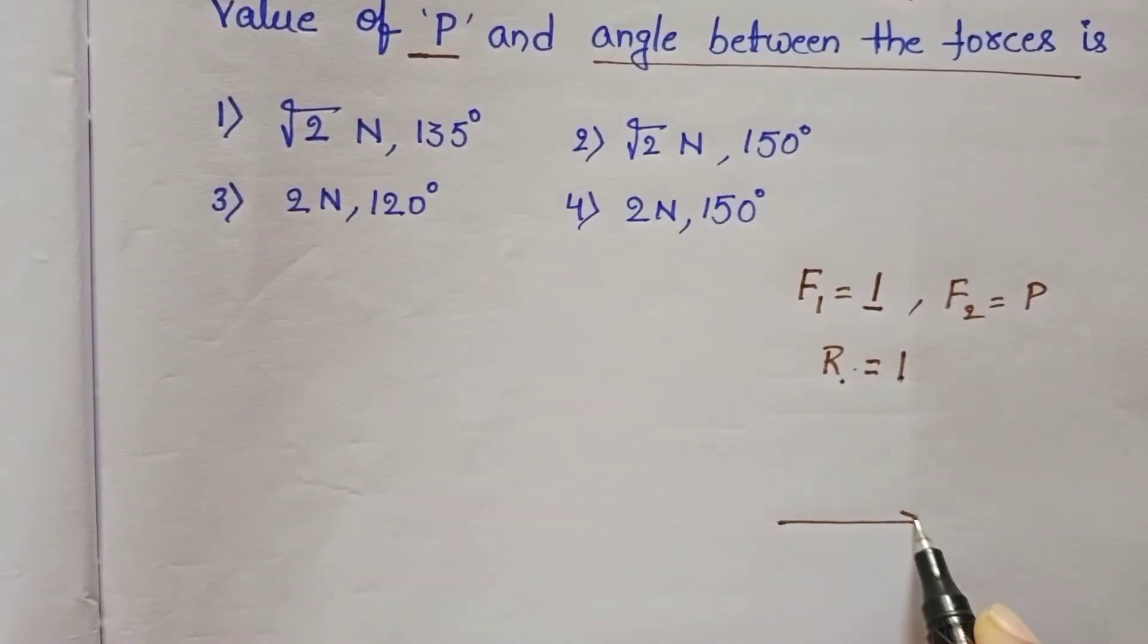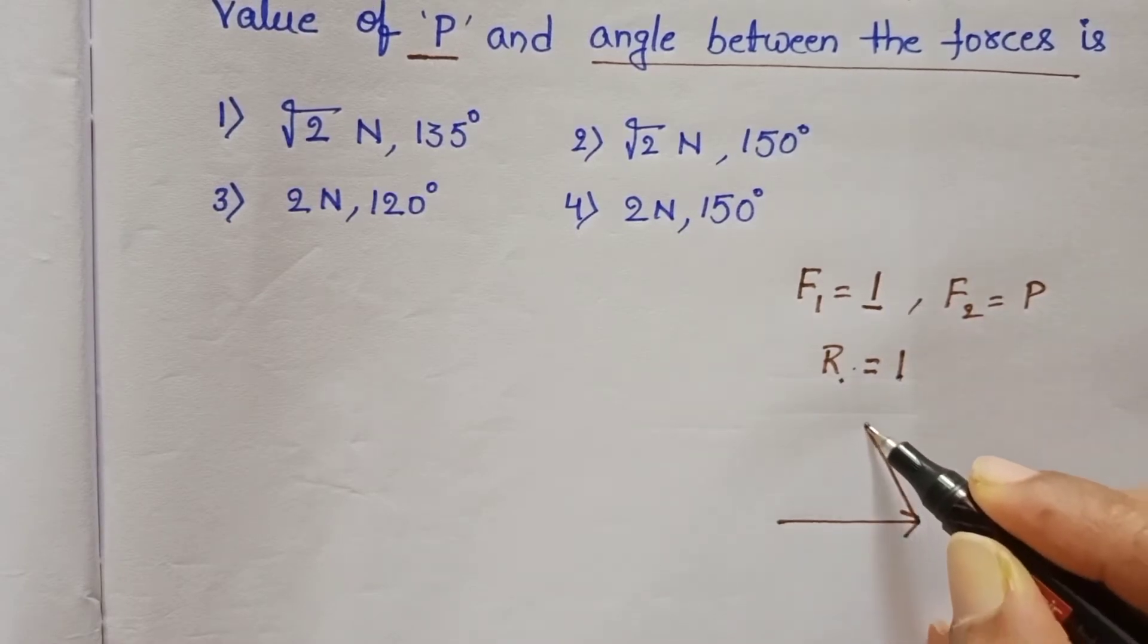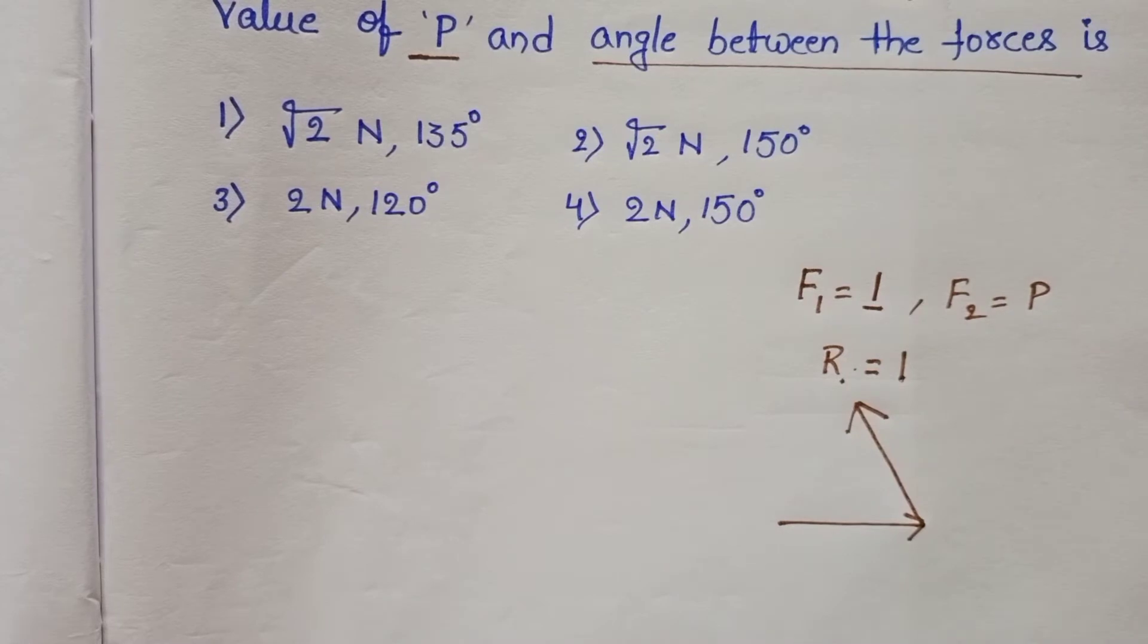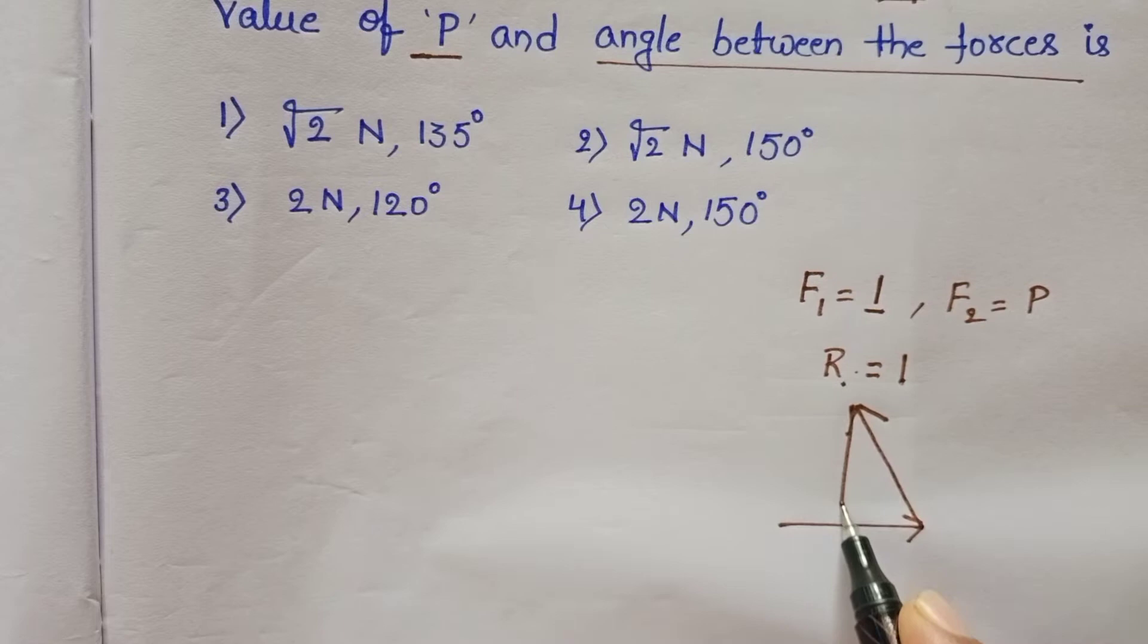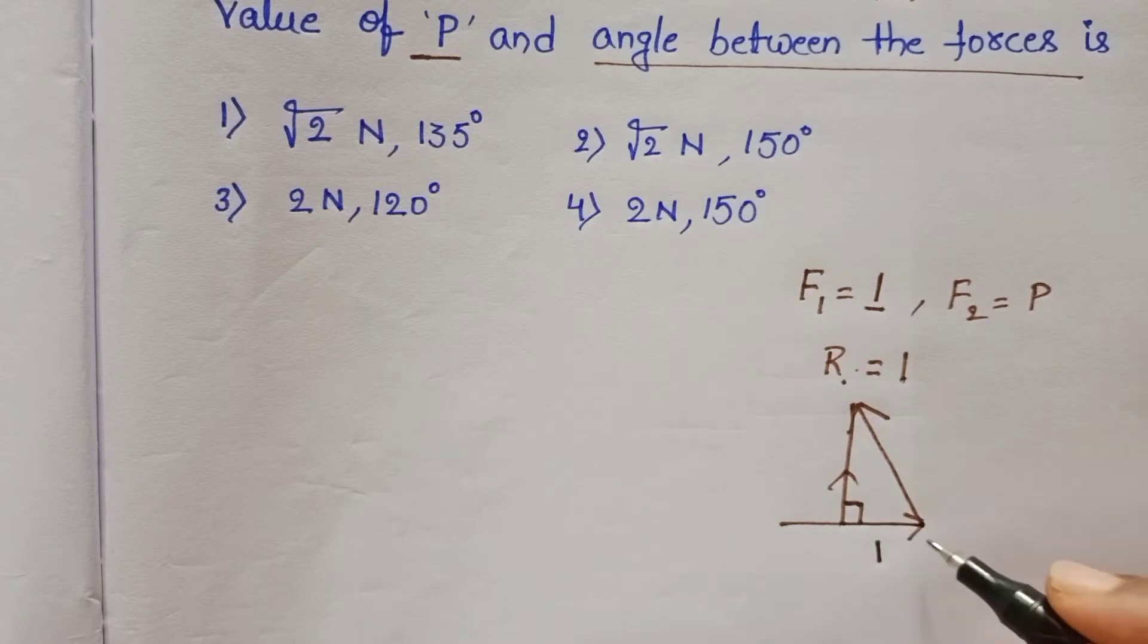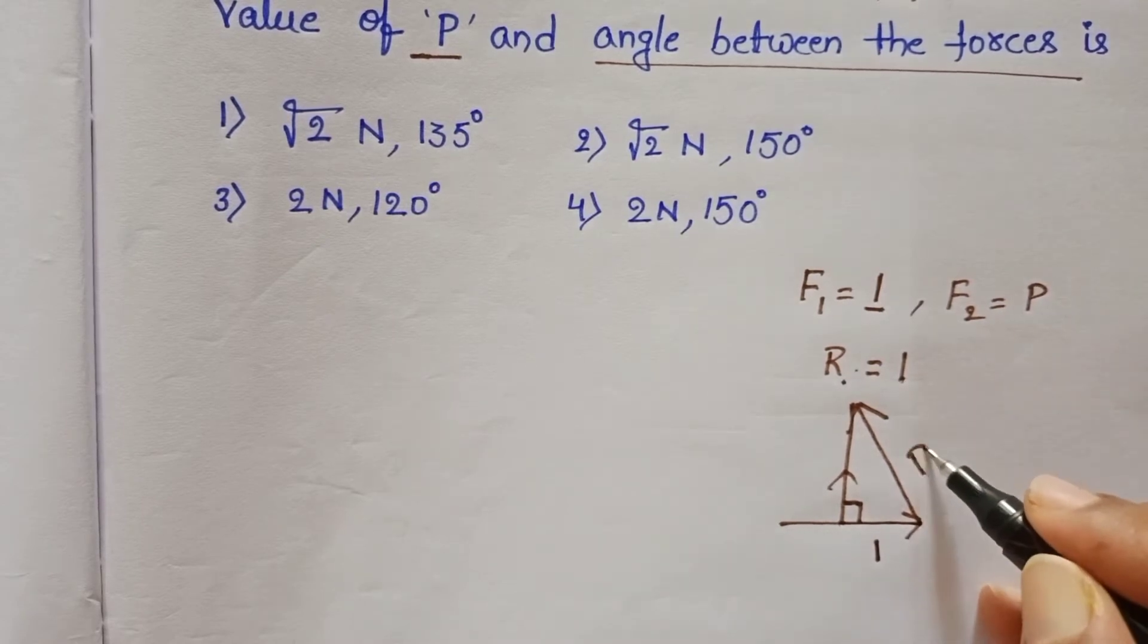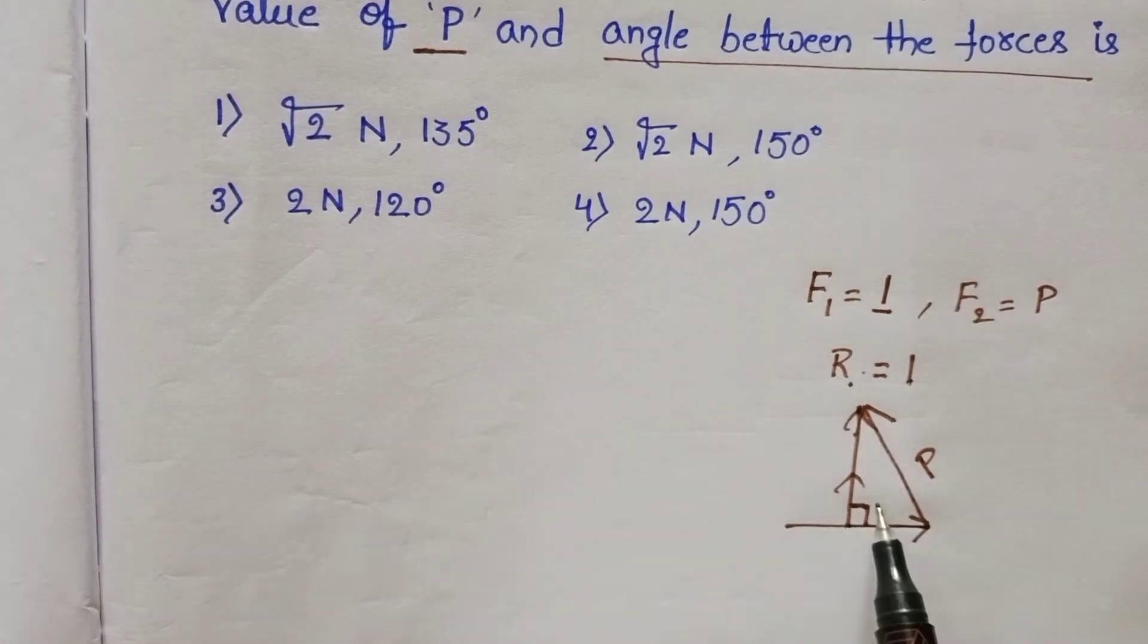First force acting along this direction and take the second force in the same order, it is acting along this direction, and the resultant of these two forces is this one. Perpendicular to first force: along this direction 1 is acting and along this direction P is acting and the resultant is acting along this direction. This diagram looks like a right angle triangle.